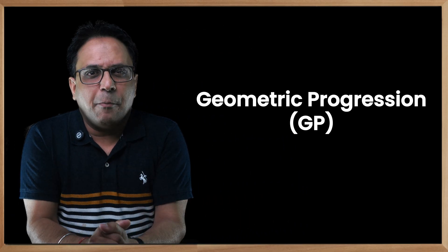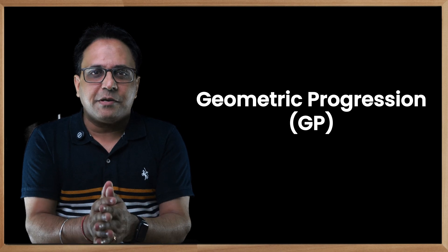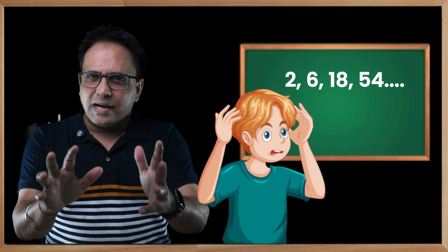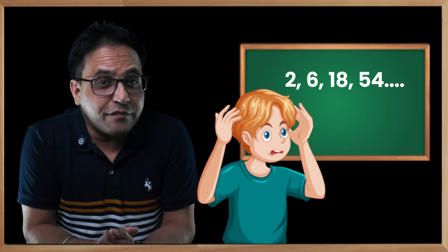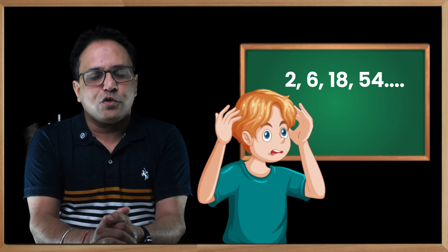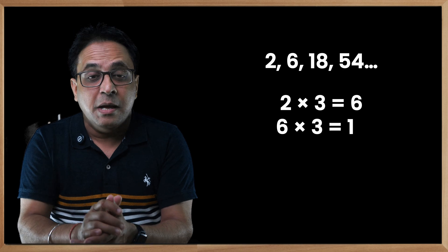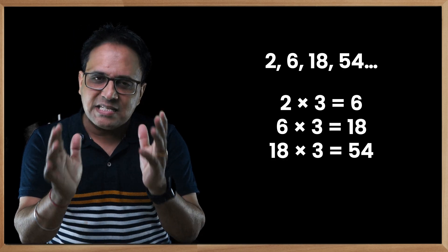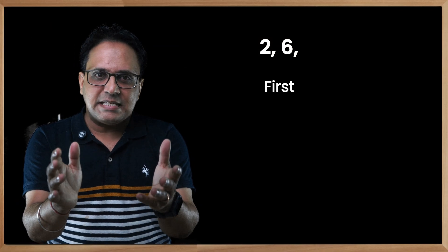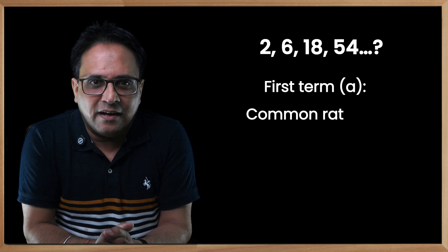Geometric progression, GP, a powerful concept in quantitative aptitude and mathematics. Struggling with sequences that multiply instead of add? Let's crack the mystery of geometric progression. In a geometric progression, each term is found by multiplying the previous term by a constant number known as the common ratio.